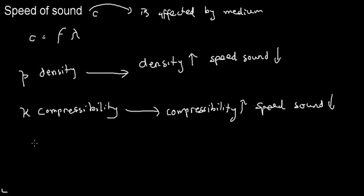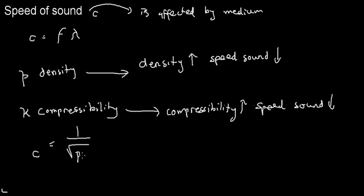The relationship is given by the following equation: c = 1 over the square root of density times compressibility. That means when either of these values goes up, the speed of sound decreases in the respective medium.